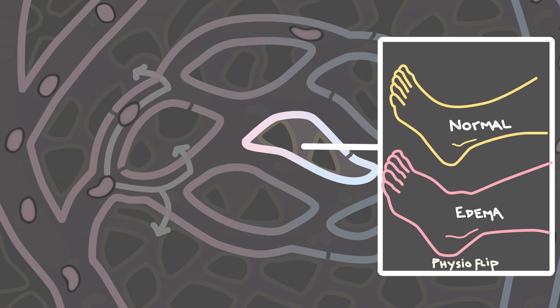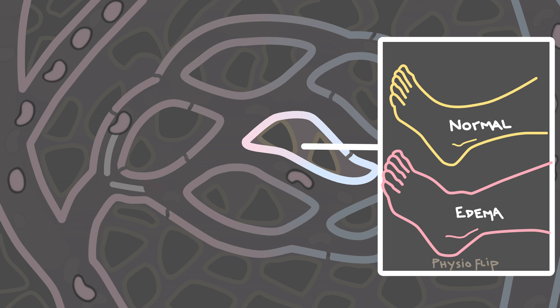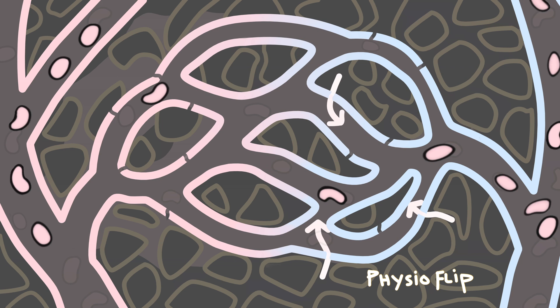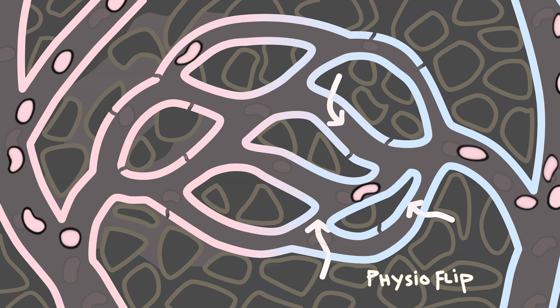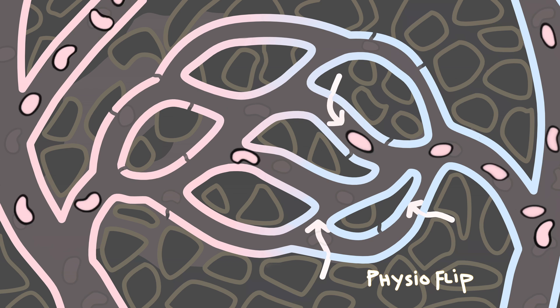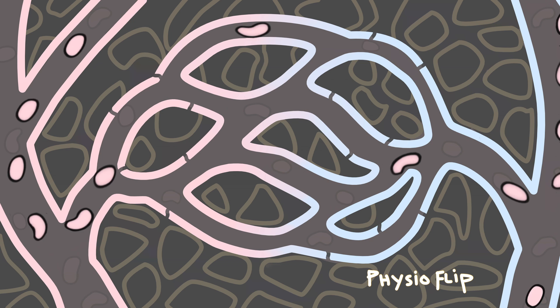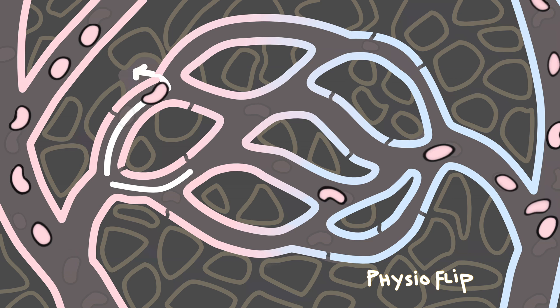To prevent this swelling from happening, much of the fluid that was filtered out is normally reabsorbed back into the capillary at the venule end. So, fluid out and fluid back in. But why was fluid forced out in the first place and how does it get reabsorbed? Well, let's zoom in first on the fluid being filtered out to see what's going on.